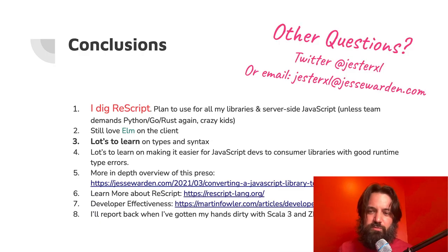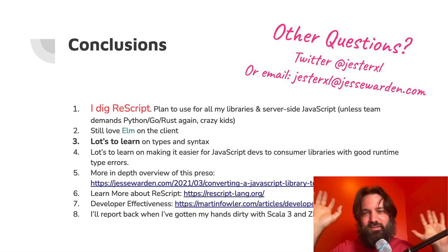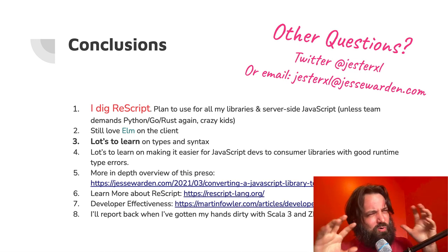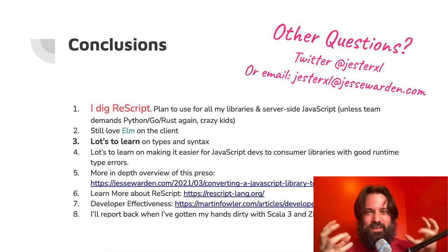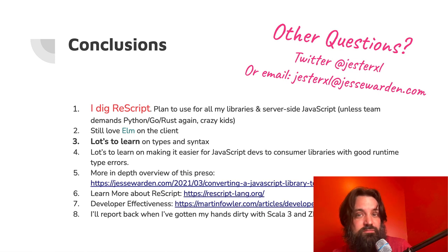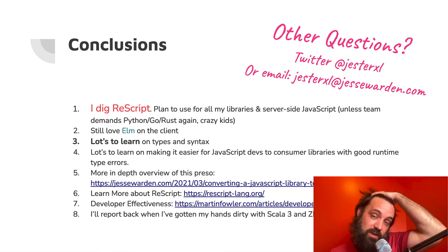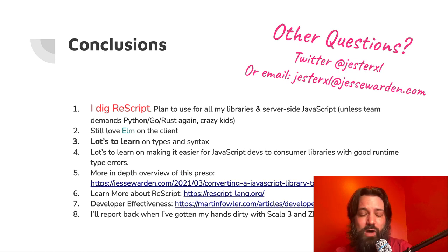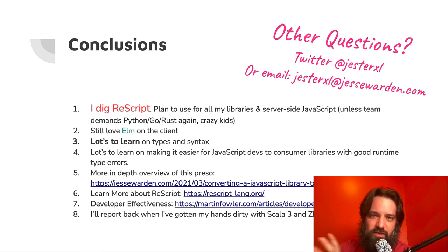The plan is to use ReScript for all my libraries and server-side JavaScript, unless my team demands Python, Go, Rust, or whatever these millennials and Gen-Zers ask me to use. I'll try to brainwash the younger ones — Gen-Z developers are like clay, you can get them to love functional programming and stay away from OOP. I still love Elm on the client. A lot of ReScript and Reason documentation is very heavy React — they really want you to write React applications in ReScript — but I'm not having it. I'm Elm 100% on the client. There's a lot more to learn in the syntax — types, functions, named parameters. Still a lot to discover.